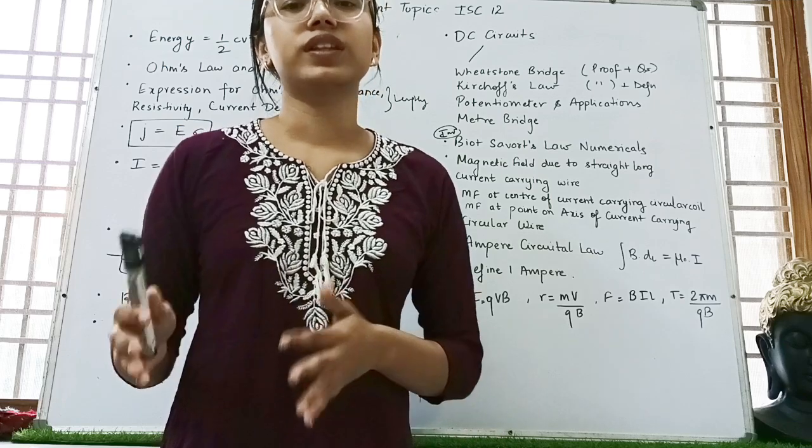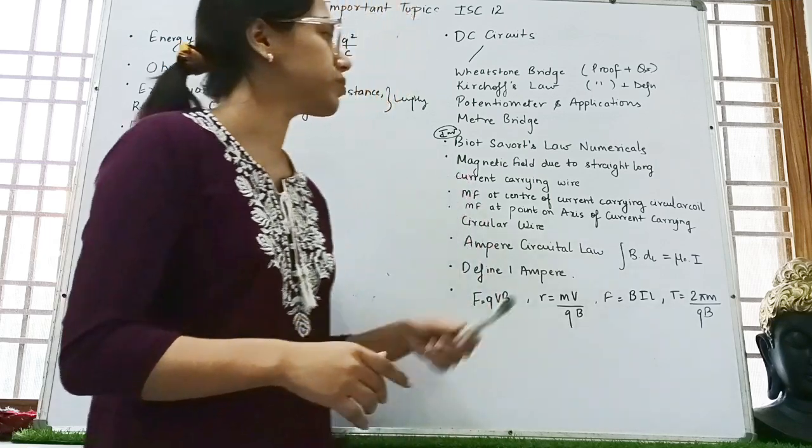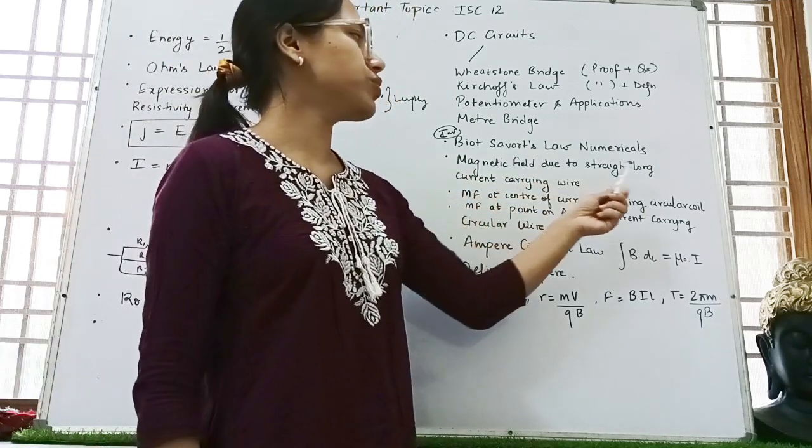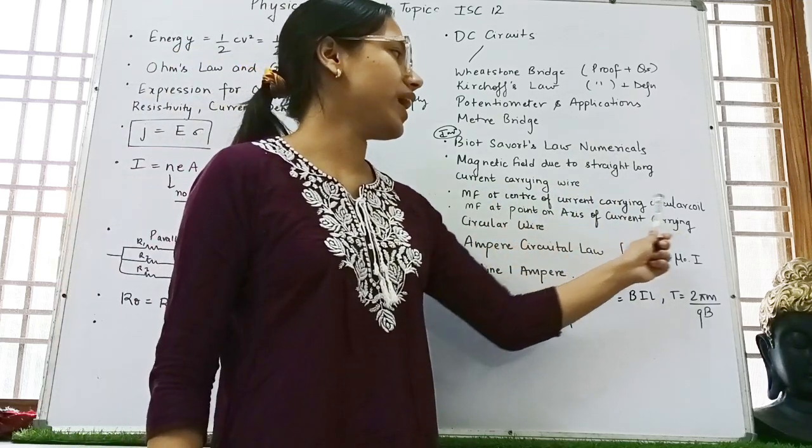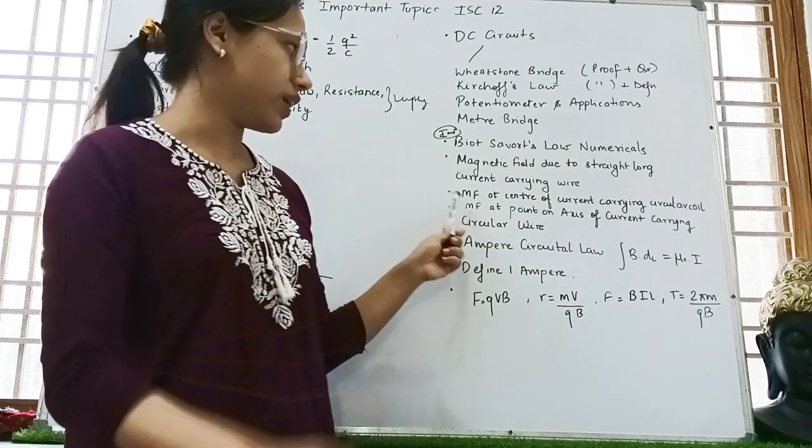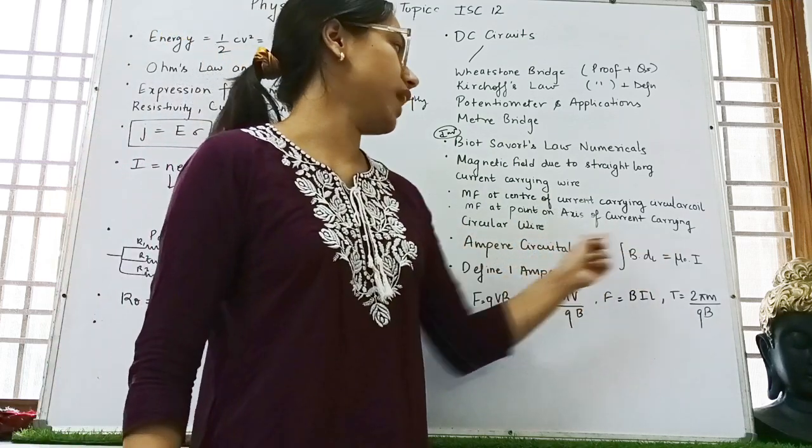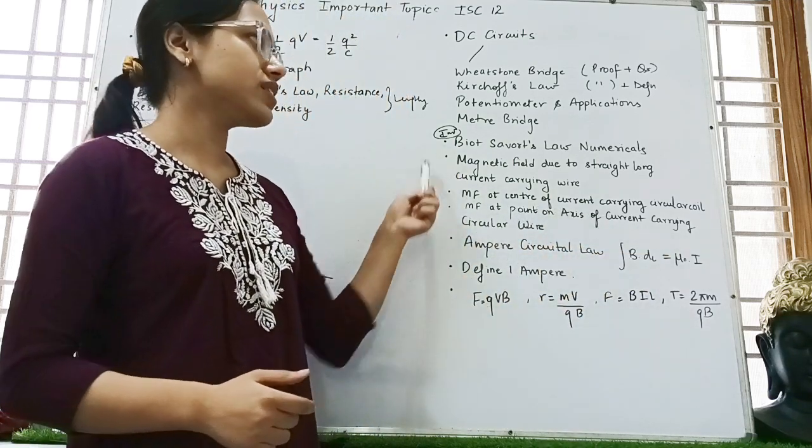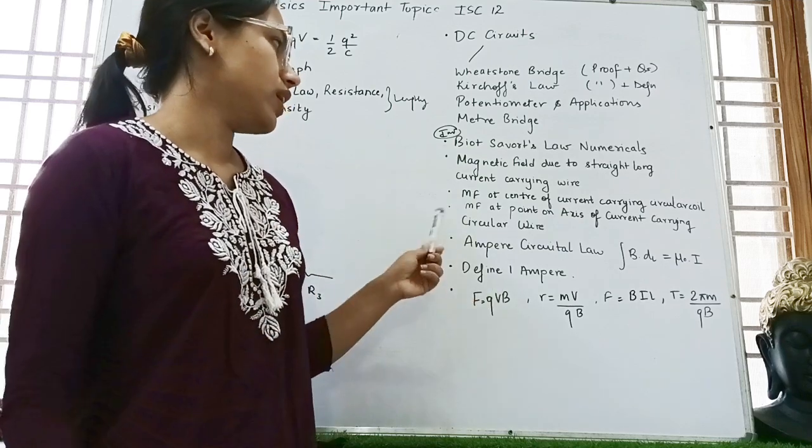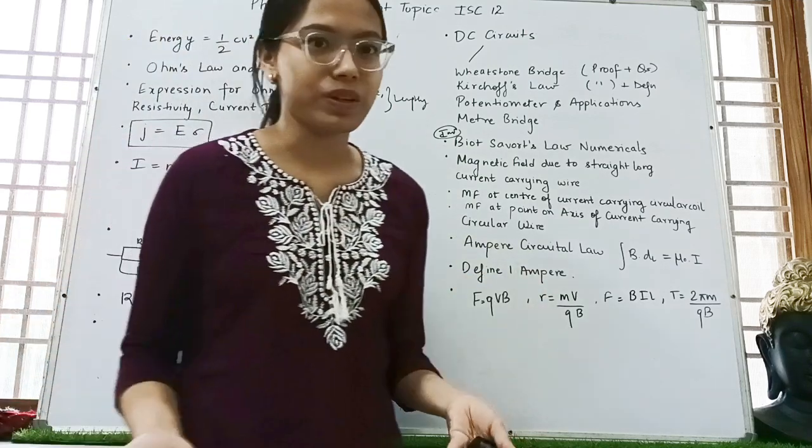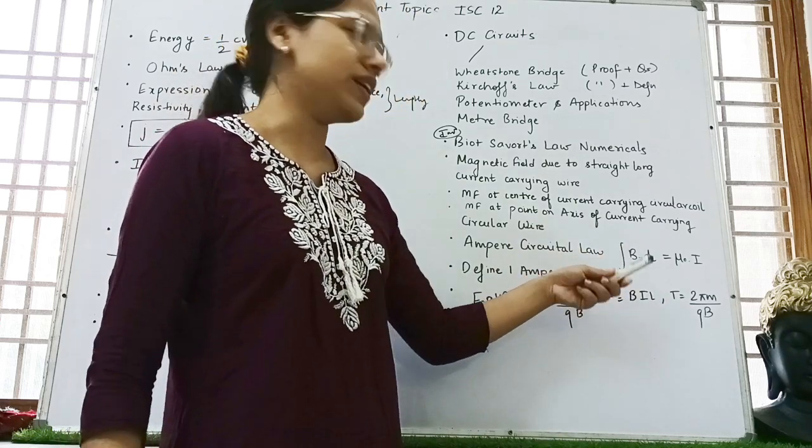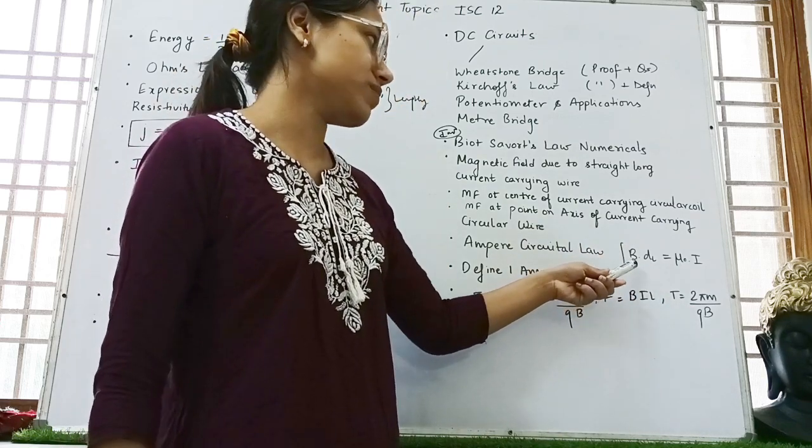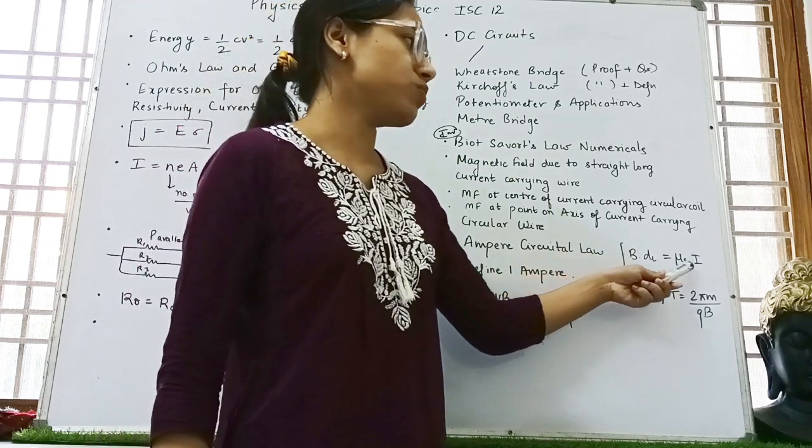Then magnetic field due to straight long current carrying wire. Magnetic field at center of current carrying circular coil. And then again, at point on axis of current carrying circular wire. These three derivations. Ampere's circular law. State Ampere's circular law. Derive it. So it is like amino particles based on it are also asked. Integration of B dot DL equals to Mu naught I.